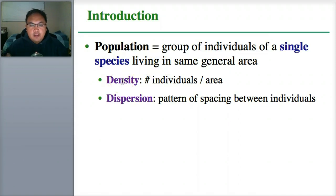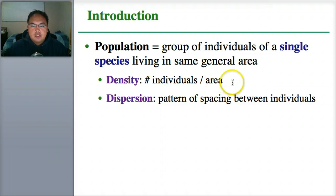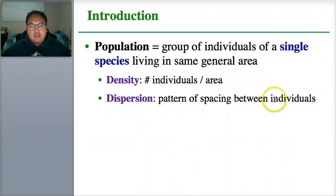Density — you may have heard something being very dense — means how many individuals are there in a given area. Something that's high density means there's tons of it in one small space. Low density means there's not that many individuals in a small space. And dispersion is the pattern of spacing between individuals — how the individuals in a population are spread out.